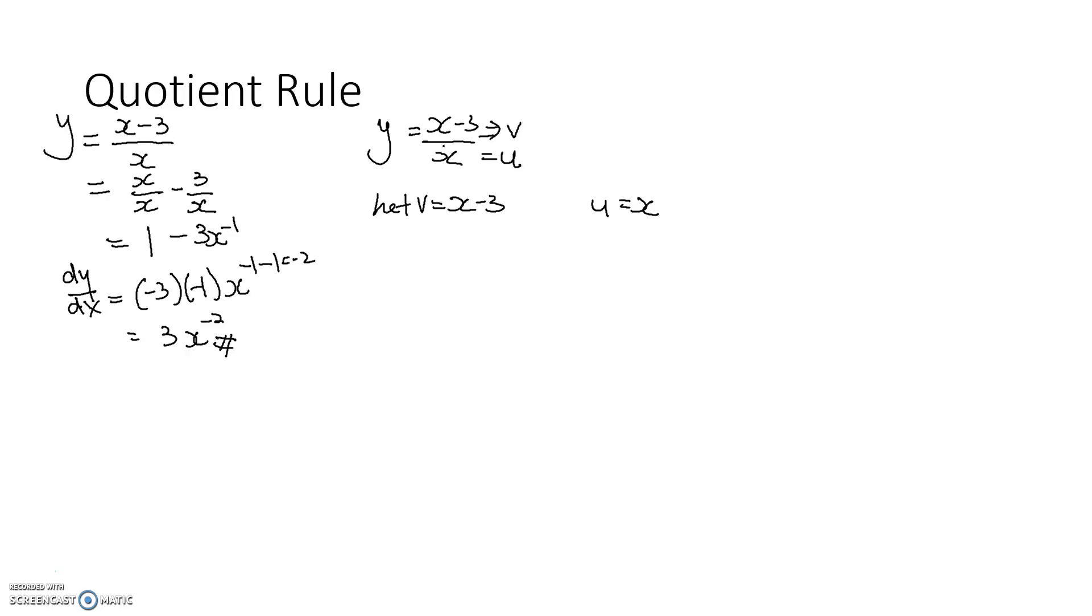So let v be x minus 3, and u be x. Now, we notice that we ignore the power minus 1 here, we just take u as what's below. So if let's say there's x power 2 here, u will be x squared, not x minus 2. So we differentiate both, dv dx, differentiate v with respect to x, you get 1, and differentiate u with respect to x, you get 1.